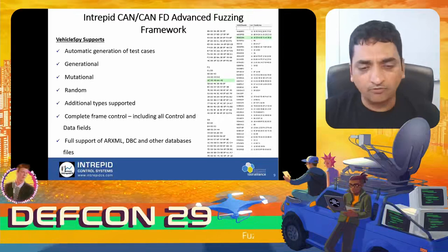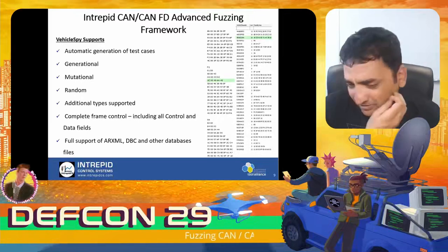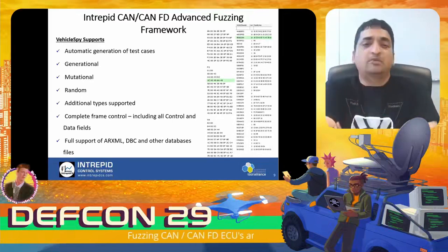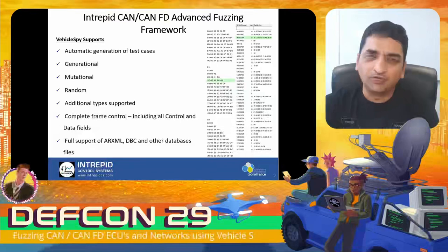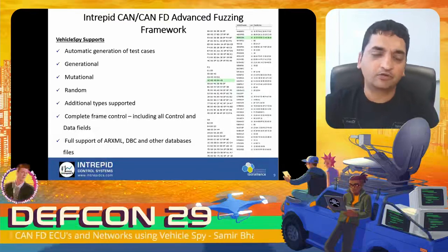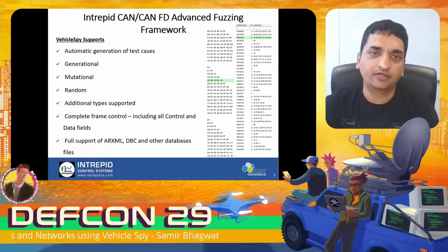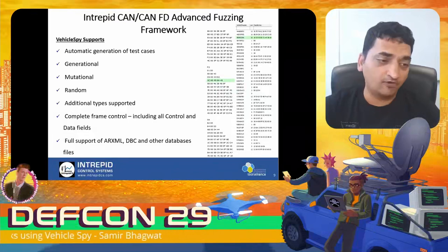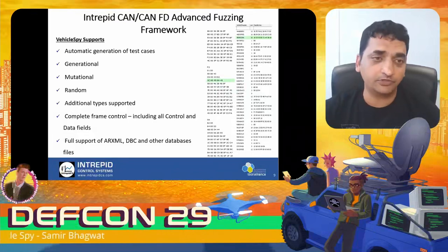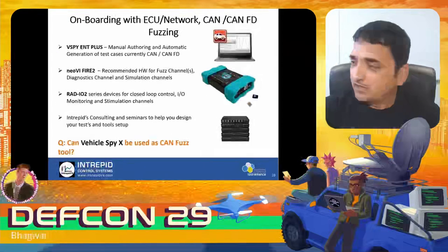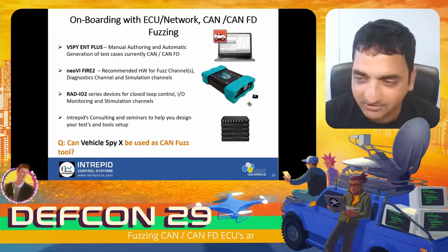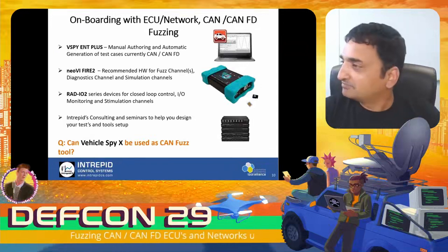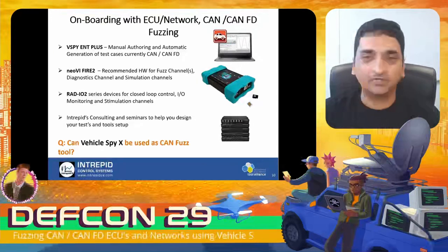One other thing I found is support for databases. Supporting ARXML and DBC files for automotive is extremely important, because that's the real way to be able to affect the performance of the device or ECUs. Seeing some pictures of how you actually do these things helps understand what can be done if you're thinking about doing penetration testing on CAN.